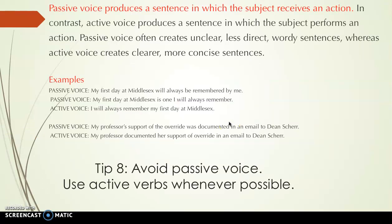Tip eight: avoid passive voice and use active verbs whenever possible. Passive voice produces a sentence in which the subject receives an action. Think of it like the joke: 'Why was the road crossed by the chicken?' When you write like that, it's hard to find out who is doing the action — that is the perfect example of a passive sentence. When summarizing this information, please make sure you're writing actively, in a clear and concise way.